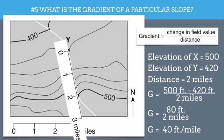Now it's simply a matter of plugging these numbers into the formula. So the gradient is going to equal the change in the elevation, which would be 500 feet minus 420 feet divided by the distance of two miles. You can simplify 80 feet divided by two miles, and you get an answer of 40 feet per mile. So what this means is that if you were to walk down this hill from x to y, for every mile you traveled, you would be getting 40 feet lower.